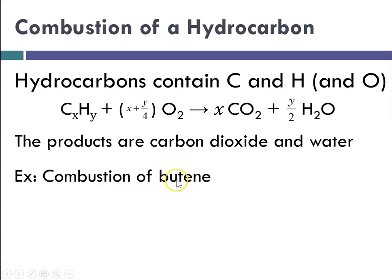So notice that the products are carbon dioxide and water, and let's look at an example. This is the combustion of a compound called butene. Its formula is C4H8. So going in here, C4H8 plus 6 O2 yields 4 CO2 and 4 H2O. Where did I get these numbers?